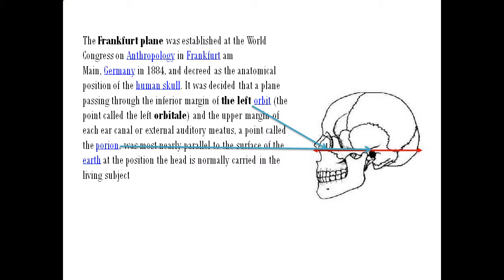This is called the Frankfurt Plane. A line drawn from the inferior margin of the left orbit, the orbitale, to the upper margin of the ear canal of the ipsilateral side, a point called the porion. From the left orbitale to the left porion, a straight line is what is called the Frankfurt Plane.